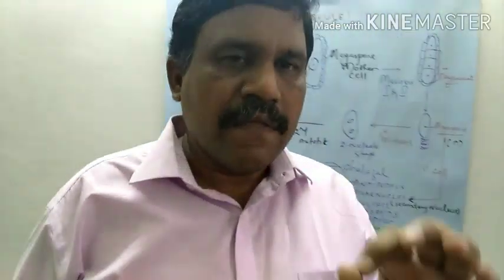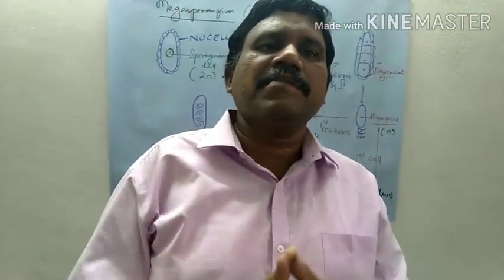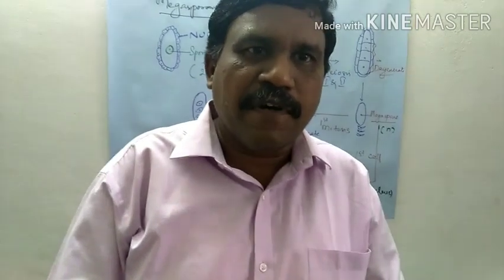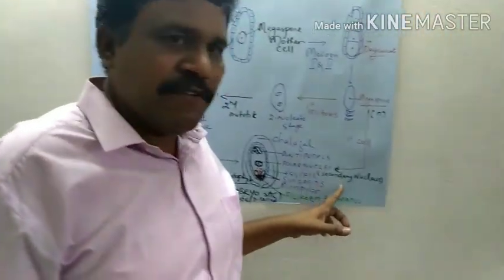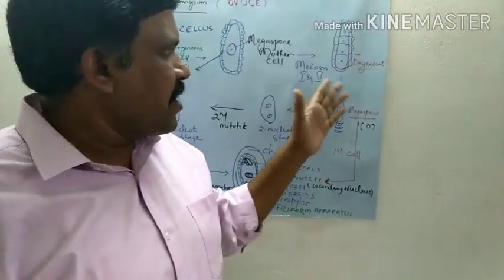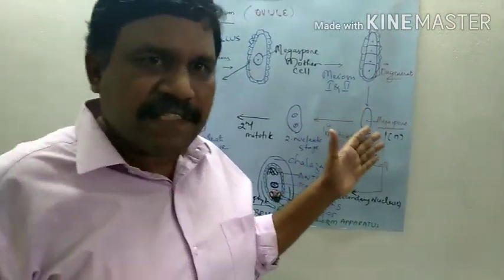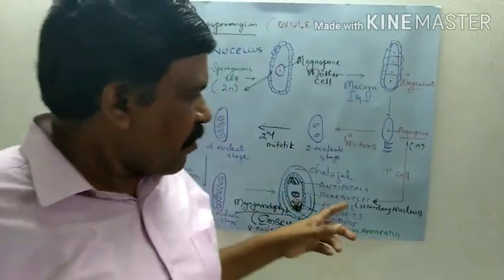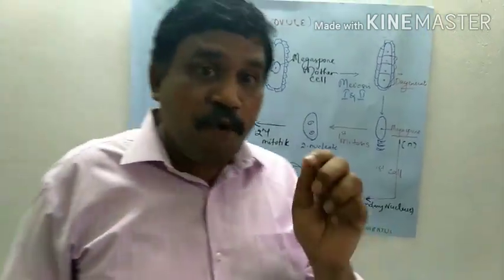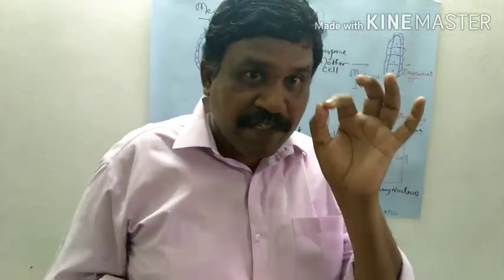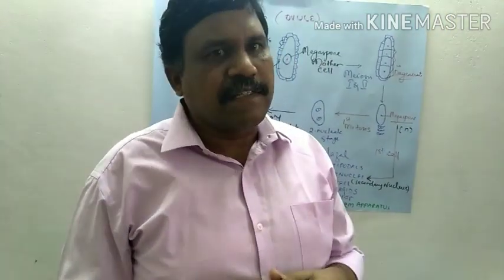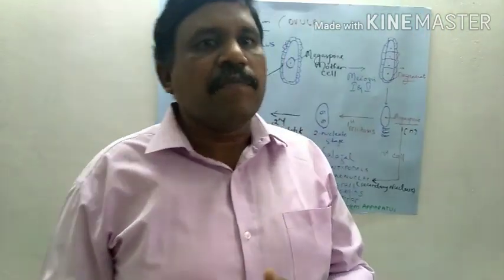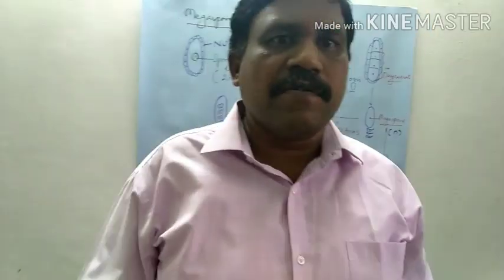Let me just test you how far you have understood. What would be the ploidy of the secondary nucleus? The Megaspore starts as haploid, so what would be the ploidy of the secondary nucleus? And what is the ploidy of antipodals and the synergids? Please answer in your comments.